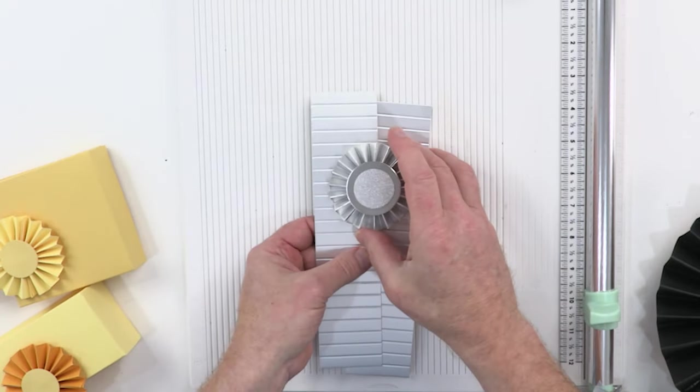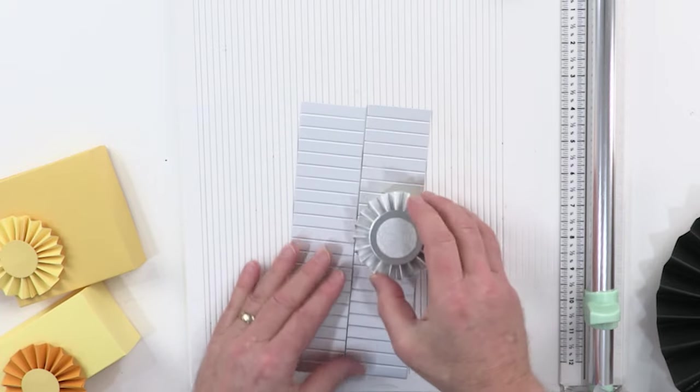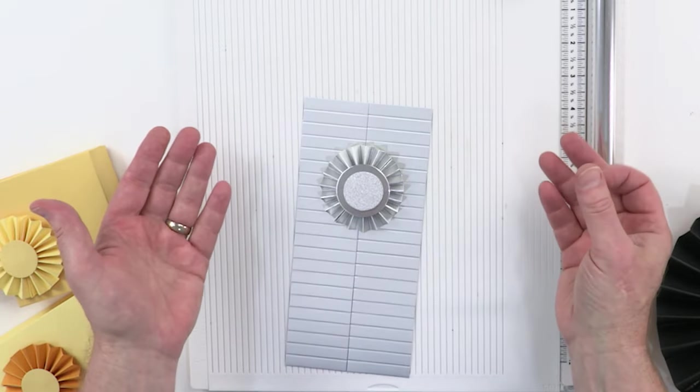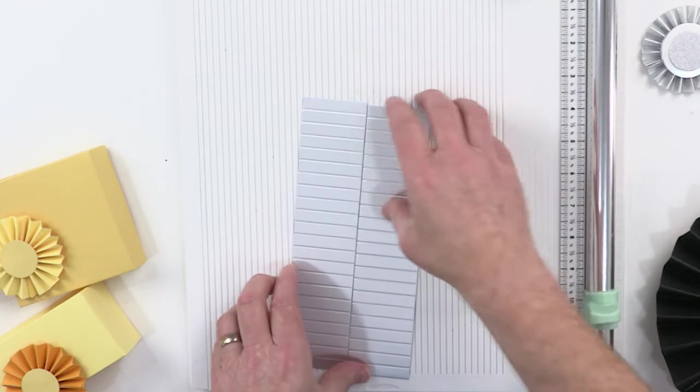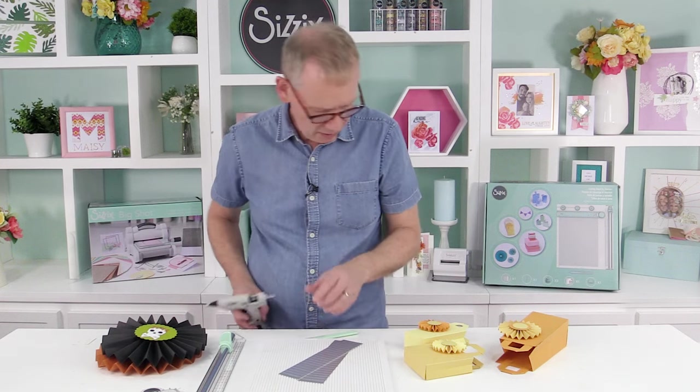Now of course there's this other one that will make a wider one. So you can put one on top of the other—that would be the width of it. And you can put one on top of the other, you can mix and match the colors, it's entirely up to you.